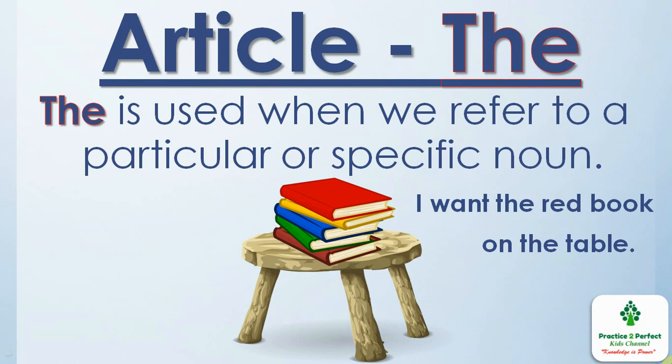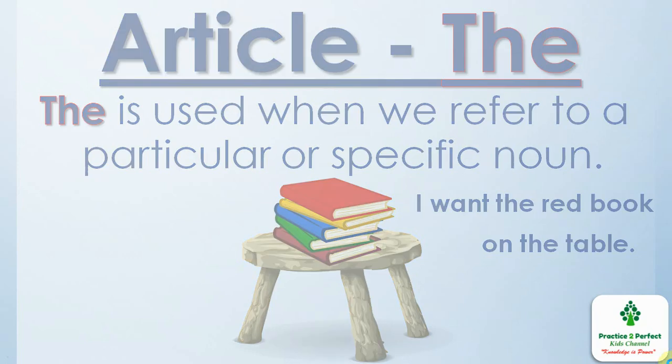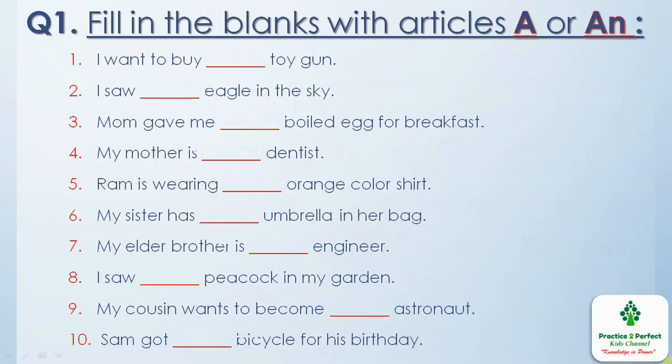I hope you have understood all the articles well. Now let us do some practice questions. Question 1: you have to fill in the blanks with articles a or an. Remember the rule — a before consonant sound and an before vowel sound.